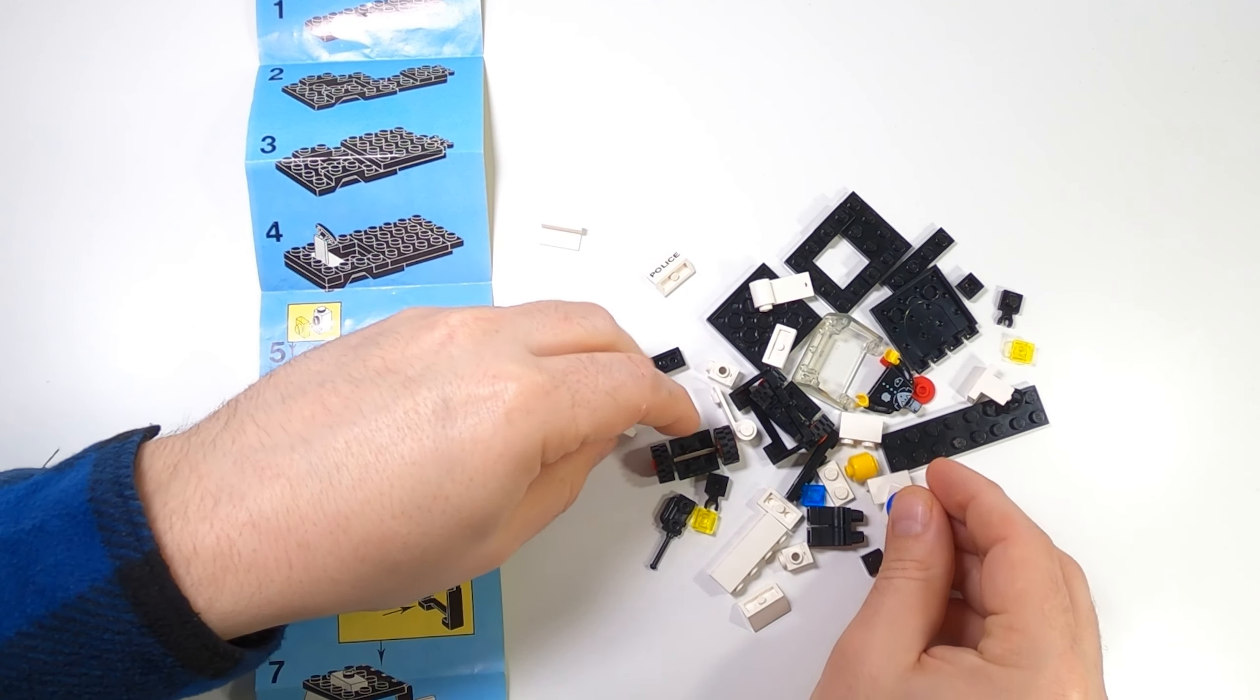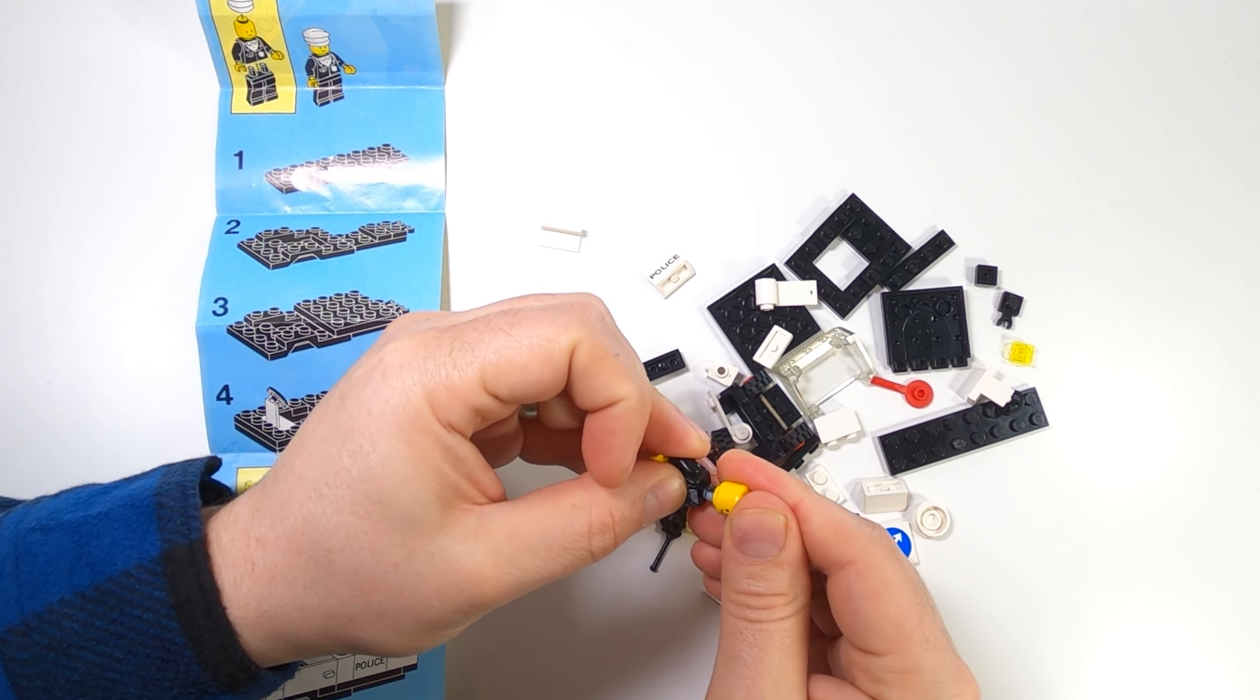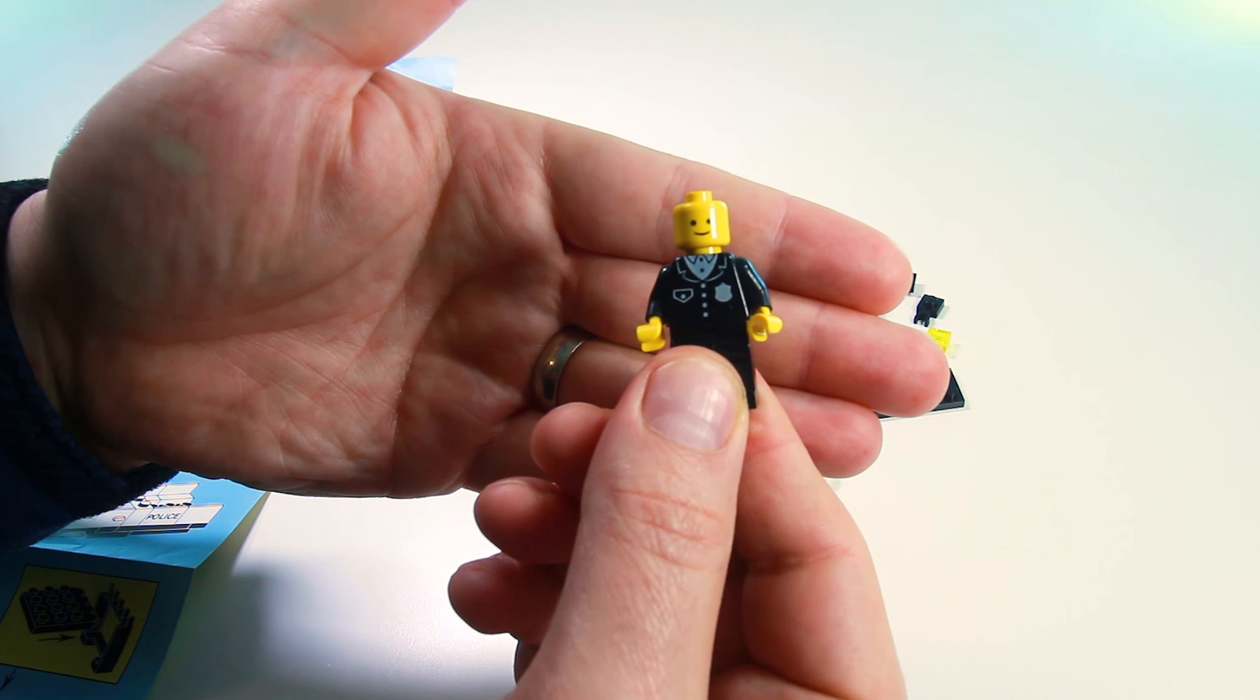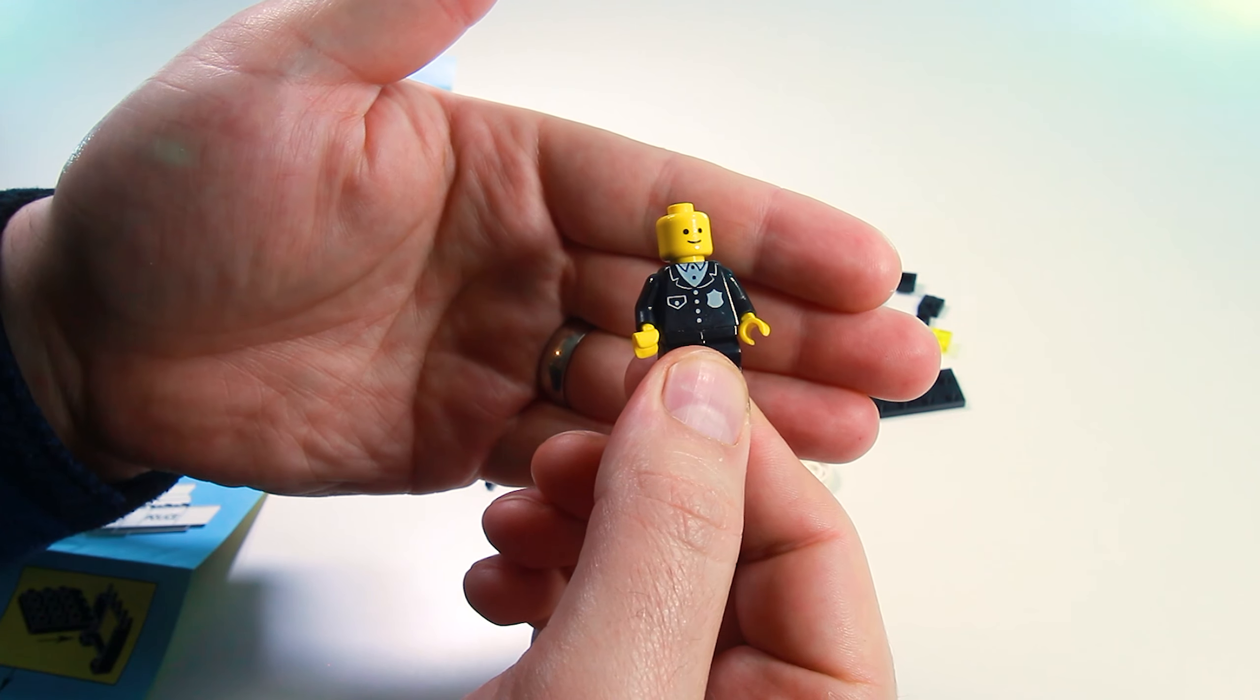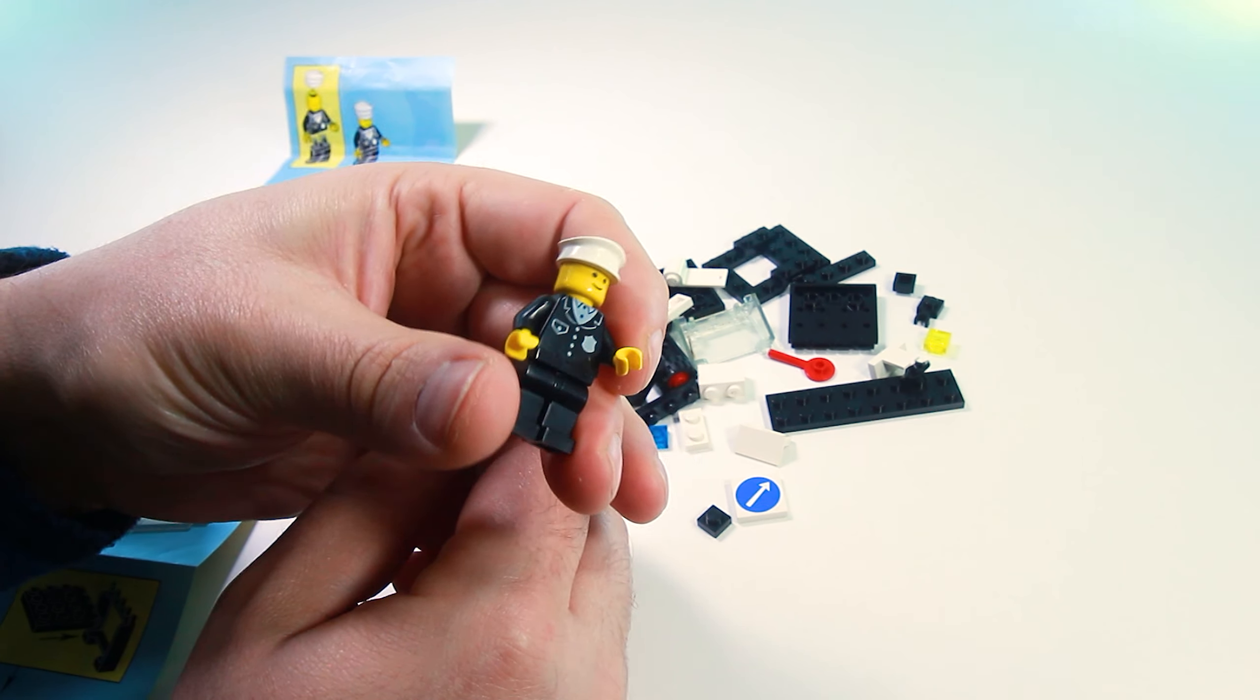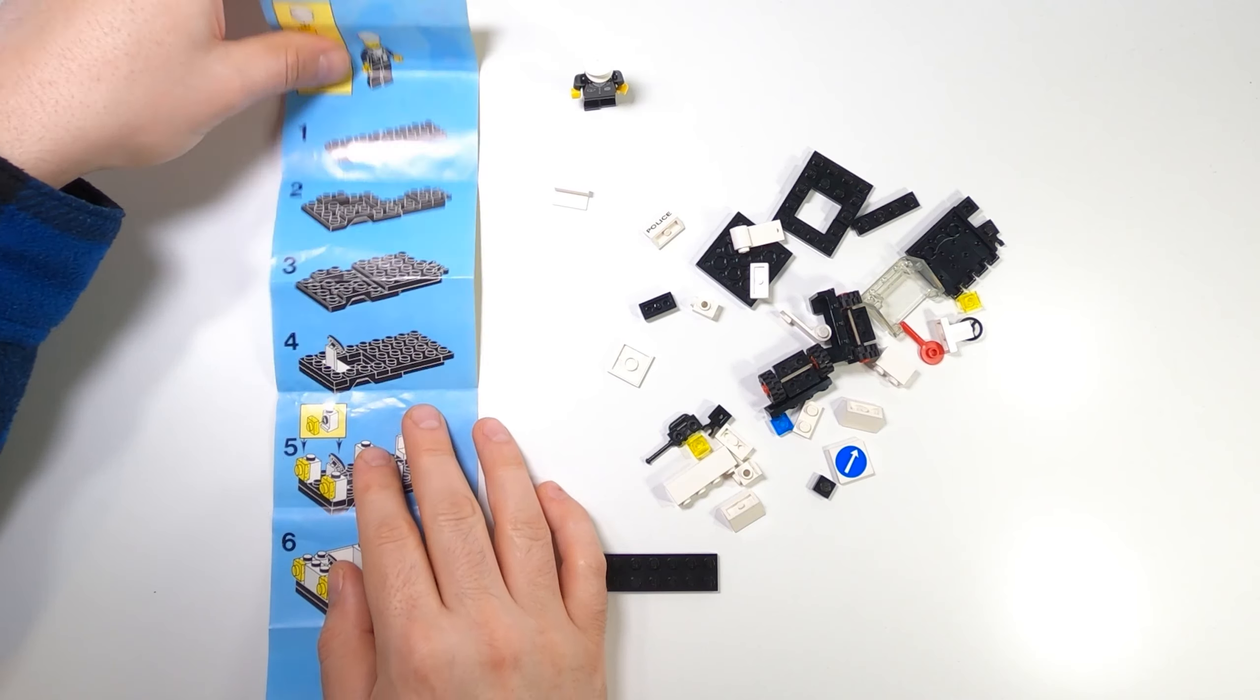Should be a pretty quick build. I'll start out with the minifigure. And he has the classic police print with the nice police suit and badge and pocket. As a kid, I didn't realize how fancy this suit was. I see it now. It was in a day and age when the police, I'm sure, didn't have the same challenges that they have today.